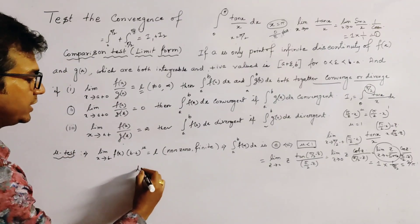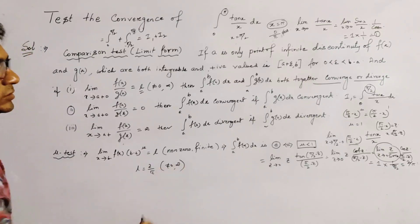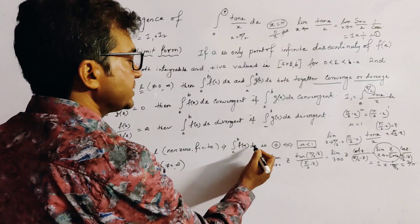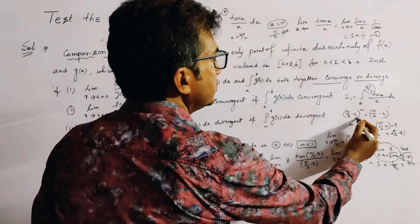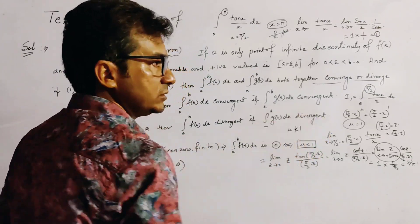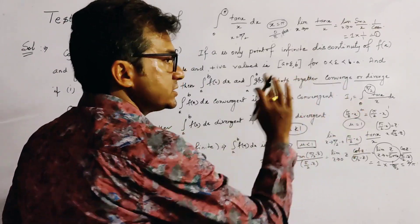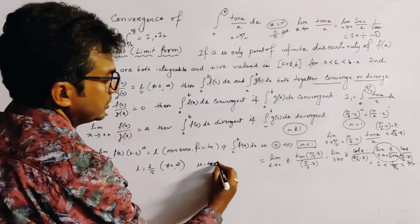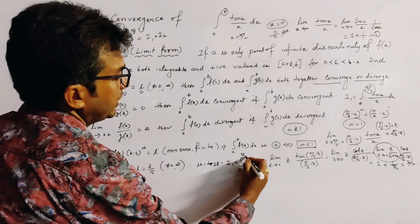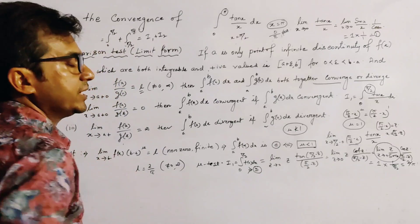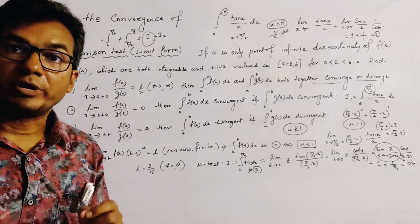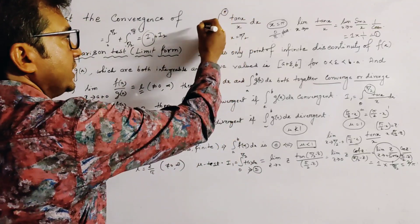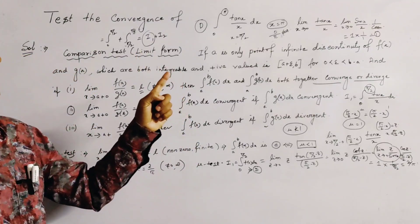The limit is 2/π, so l equals 2/π, which is non-zero and finite. The μ-test states that the integral from a to b of f(x) dx is convergent if and only if μ is less than 1. But here we took μ equal to 1, so μ is not less than 1. Therefore, by the μ-test, I₁ equals the integral from 0 to π/2 of f(x) dx is divergent. Since the first part of this integration is divergent, the overall integration must also diverge. So the given improper integration is divergent.